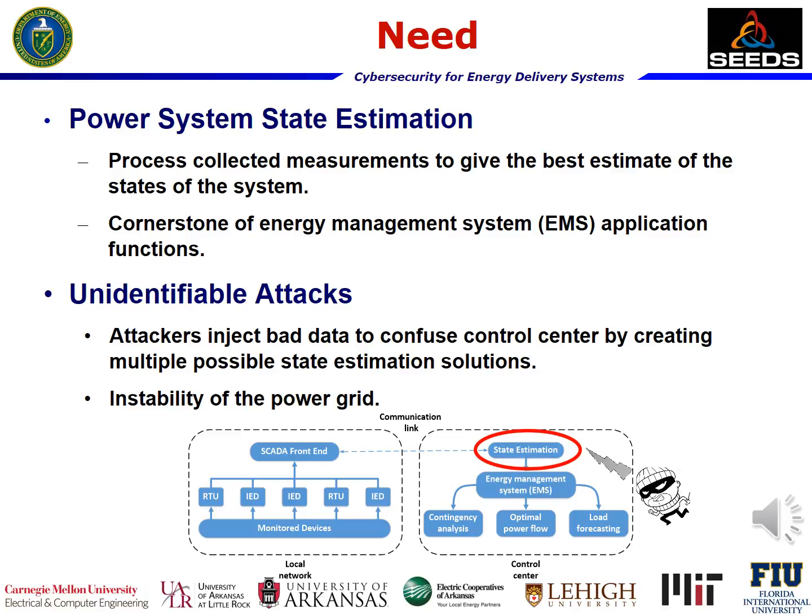Power system states are voltage amplitude and phase angle on each bus. Such information is the cornerstone of energy management system applications, such as contingency analysis, optimal power flow, and load forecasting.